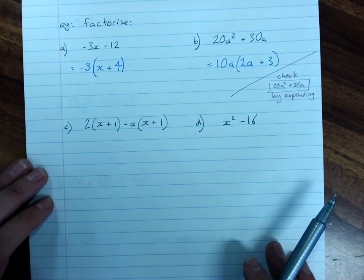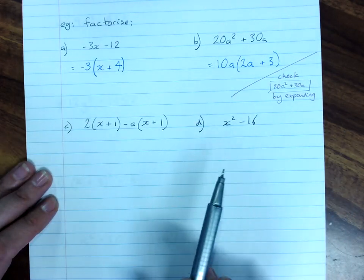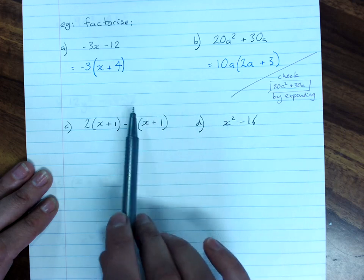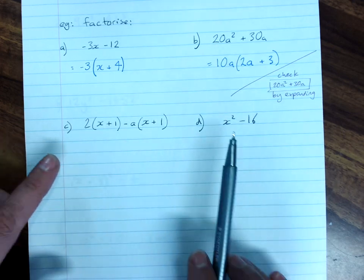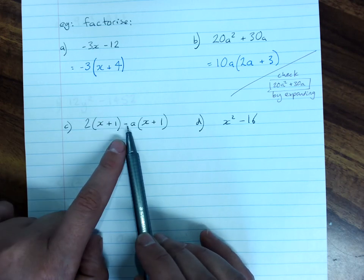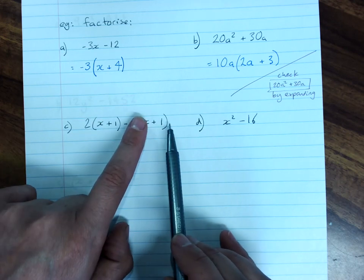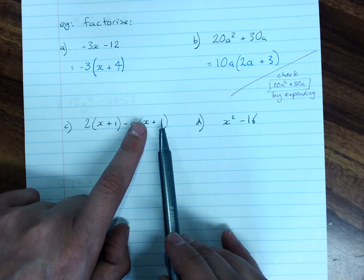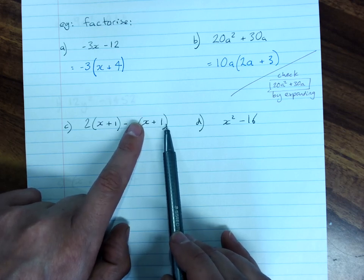Now we get a little bit trickier here. It doesn't look at first glance as if there's a common factor, but look, this is 2 times x plus 1 minus a outside of x plus 1. The HCF here is x plus 1.